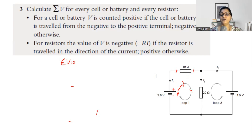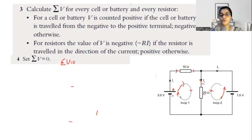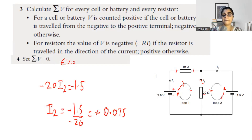Let's work on loop 2 to understand the equation. Since I am going in the anti-clockwise direction, I am going in the direction of I2, so the voltage across 20 ohms is negative. Using V equals IR, the current is I2 and resistance is 20, so that gives minus 20·I2. Moving upward, I end up at the positive terminal of the battery, so: minus 20·I2 plus 1.5 equals zero. Rearranging, I2 equals 1.5 over 20, which is 0.075 amperes.